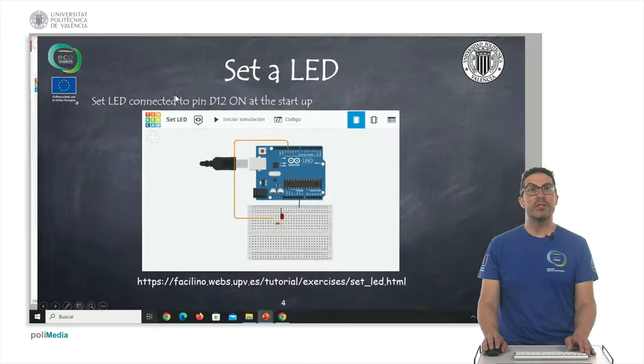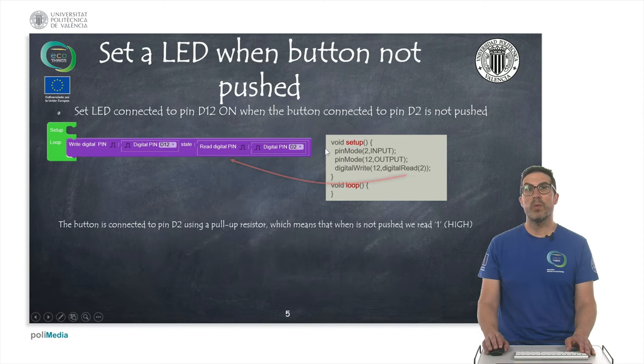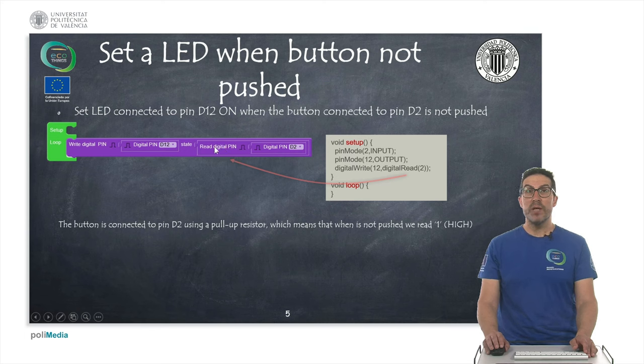Let me show this second example about how to work with LEDs. The idea here is that we have a button connected to pin D2 and when it's not pushed, then the LED should be turned ON. But when we push it, the LED should be turned OFF. And for that, we use this instruction, read digital.